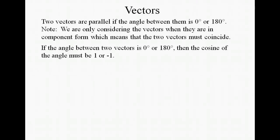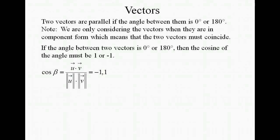So if the angle between the two vectors is 0 or 180, then the cosine of the angle must be 1 or negative 1. So all we have to do is show that the cosine of beta formula is going to be negative 1 or 1 to show that the two vectors are parallel.